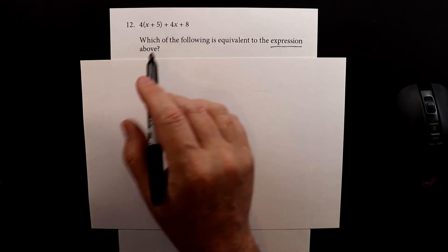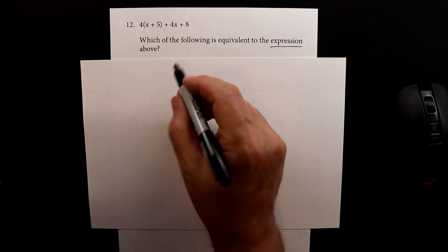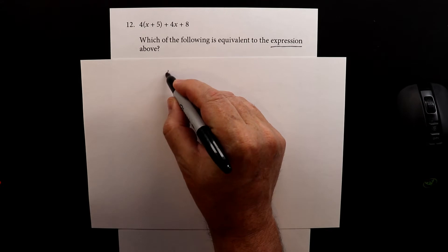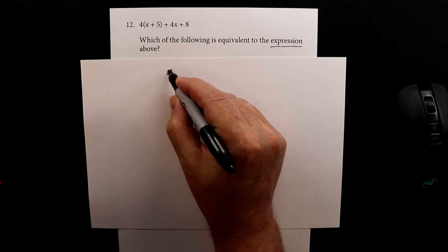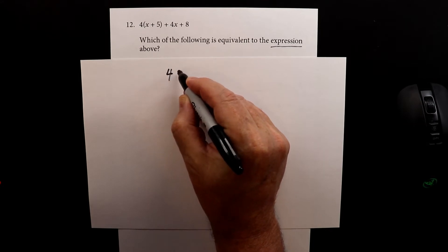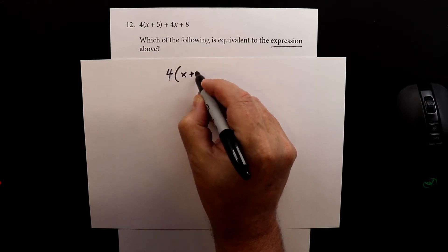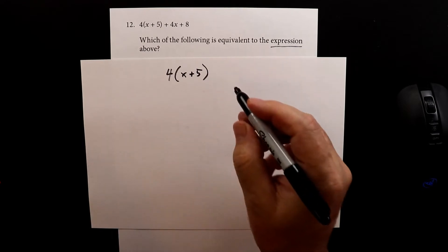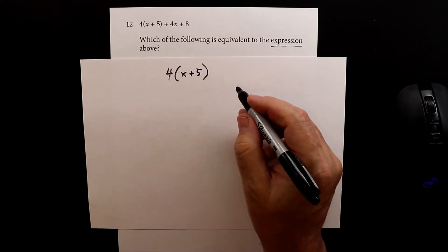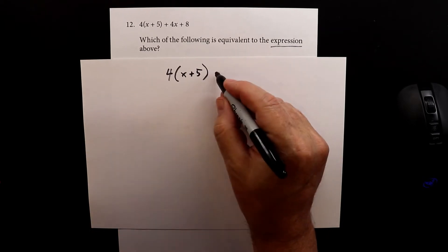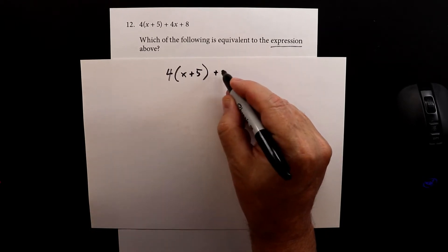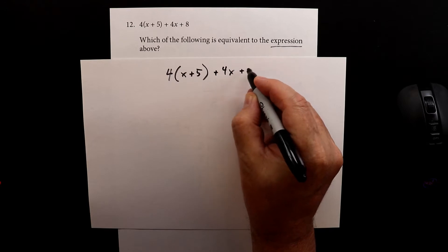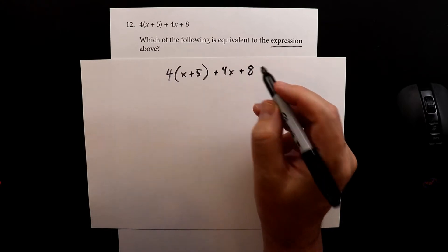So let's write this out and figure out what to do. We have 4 and then we have in parentheses x plus 5, plus 4x plus 8.